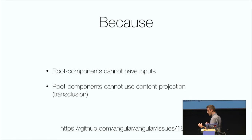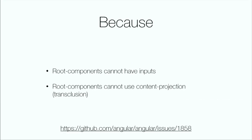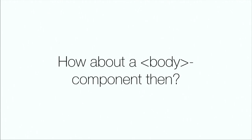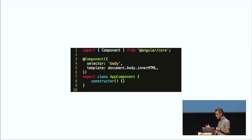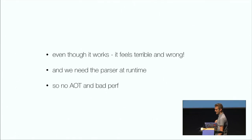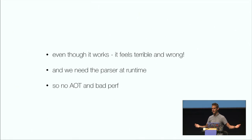About 12 months ago I was in a hacky mood when I came to this realization, and I thought: how about we make a body component? We want the body component to have the template of the page coming from the CMS. So the template is taken directly from the body's inner HTML, and we render out a body component. It turns out this actually works — but it just feels so wrong, and obviously it is. We couldn't ahead-of-time compile because we don't know ahead of time what the CMS will output, and we'd need the parser at runtime, making Angular huge and slow.